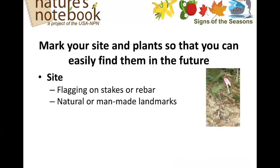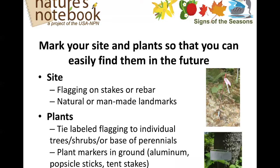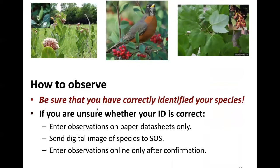So, marking your site. This is common sense — just whatever will work for you. Options include flagging on stakes or rebar, natural or human-made landmarks, tying label flagging to individual trees, shrubs, or perennials, and putting plant markers in the ground. Basically, use whatever works for you to note where your plants are and which plants they are.